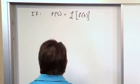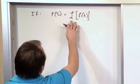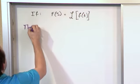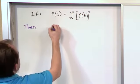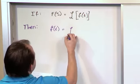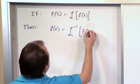And you would write it like this. You would say, if the Laplace Transform F of S, capital F of S, is equal to Laplace Transform of some function of time, then we would say that the reverse is also true, that the function of time can be recovered by taking something called the inverse Laplace Transform of F of S.